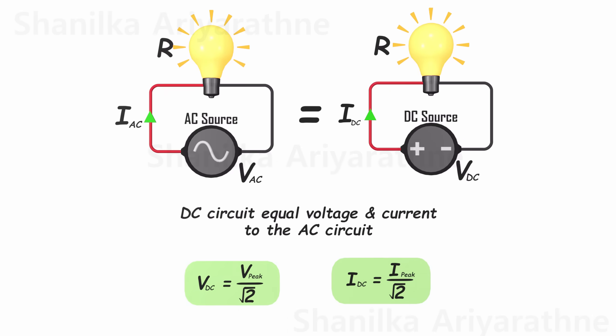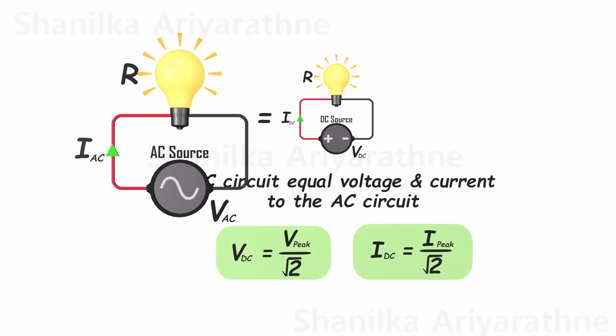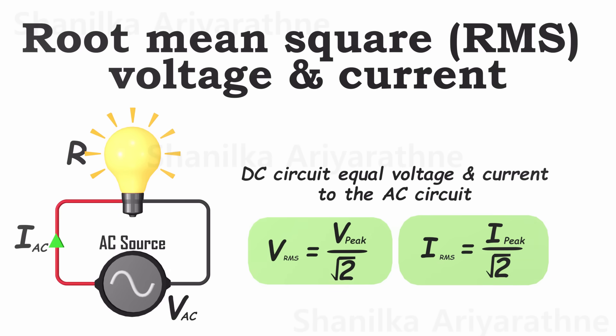Using this DC circuit analogy makes calculations in AC systems more straightforward. These values derived are commonly known as root-mean-square values for AC systems. Almost always, RMS values are employed to express the voltage and current in AC systems.